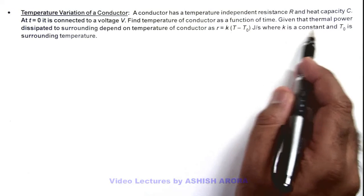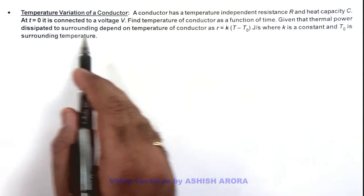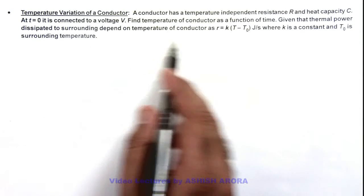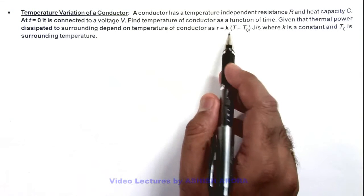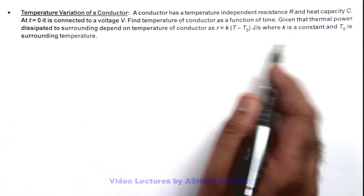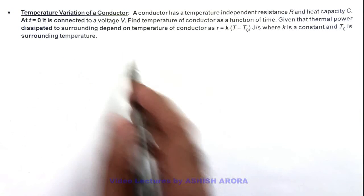It is also given that thermal power dissipated to surrounding depends on temperature of conductor as k(T - T₀) joule per second, where k is a constant and T₀ is the surrounding temperature.